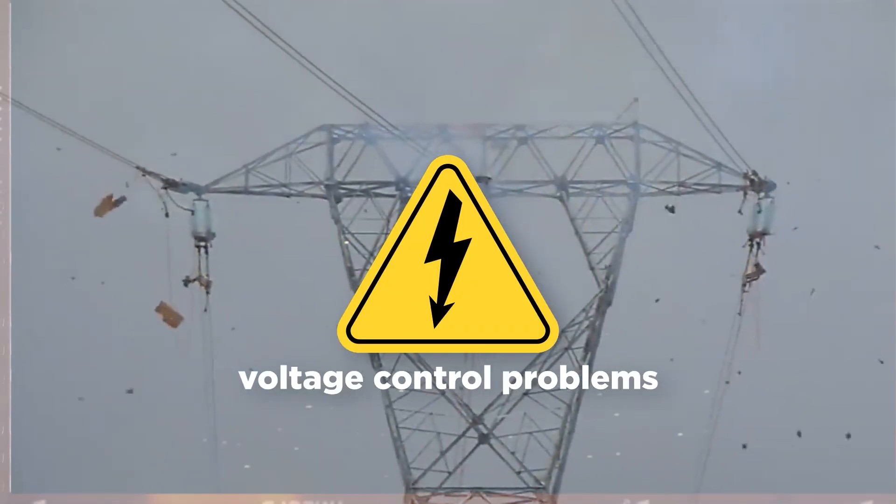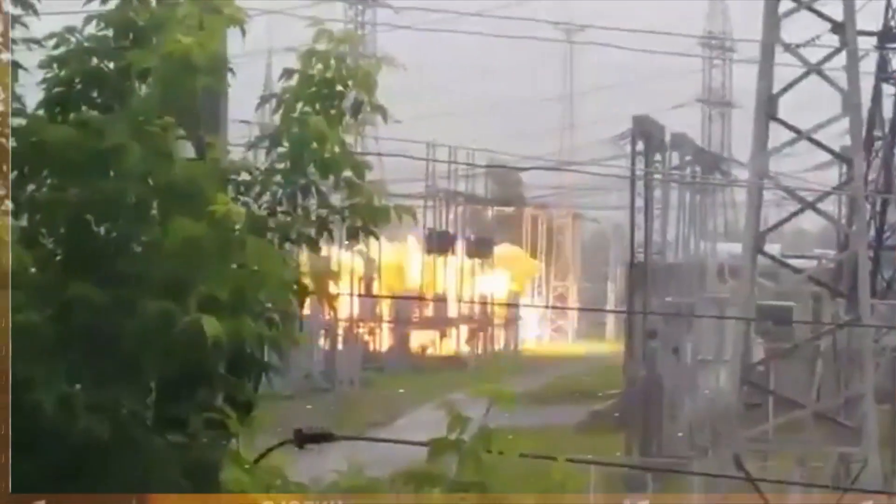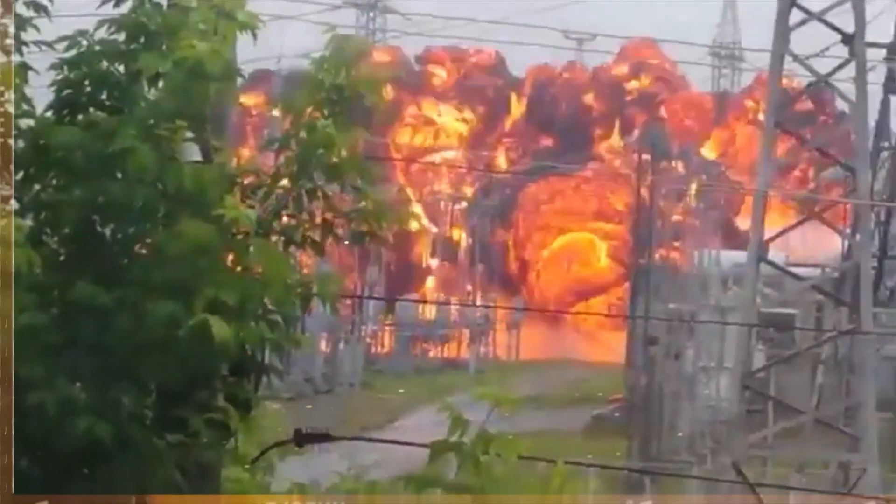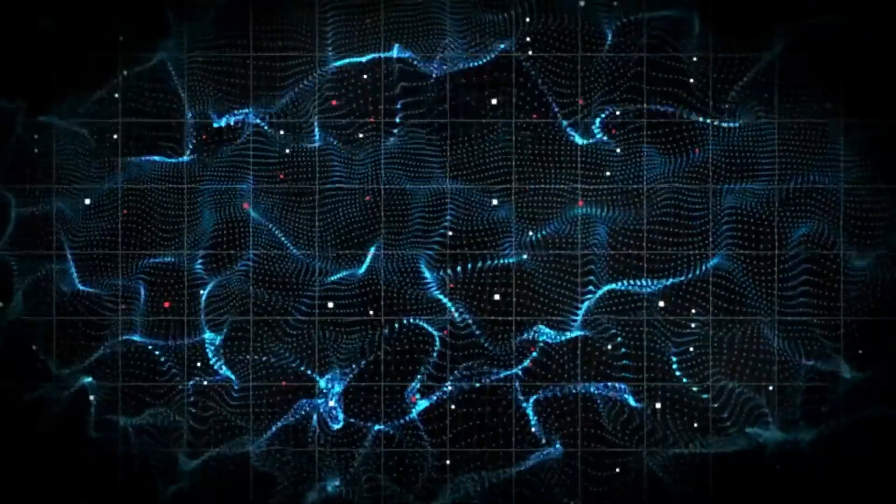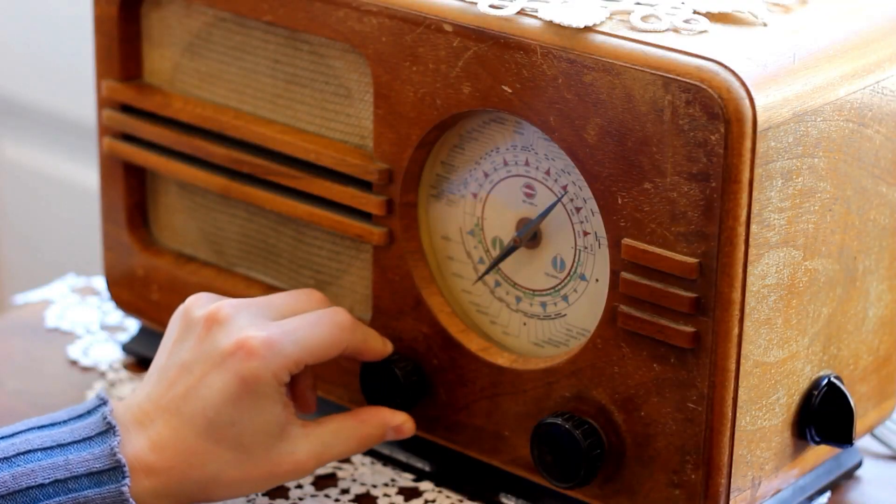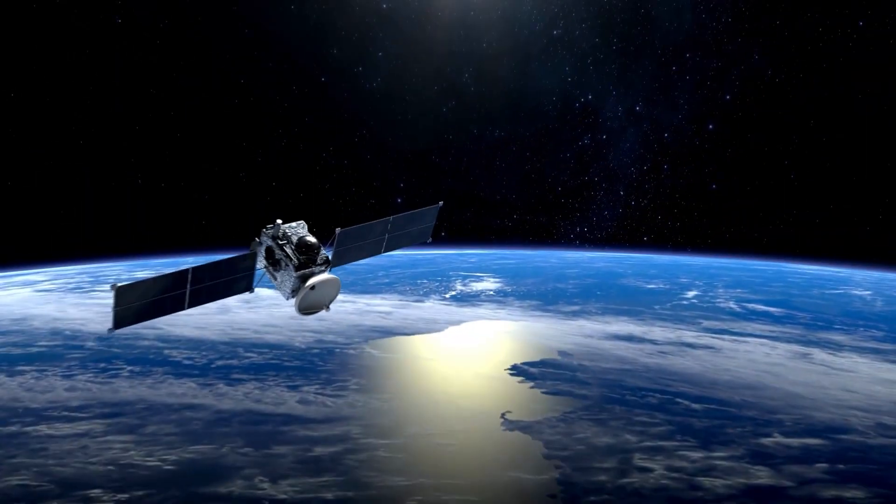While these events are uncommon, when they occur they result in significant disruptions to power transmission and communication systems. Affected power grid transmission systems can face widespread voltage control problems, and some grids might experience total collapse. High voltage power transformers risk damage, potentially disabling entire power networks and leading to citywide blackouts.